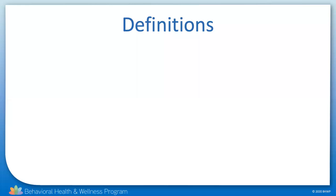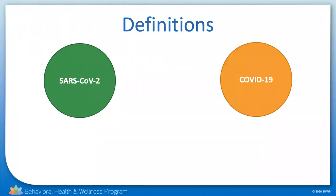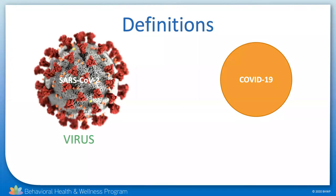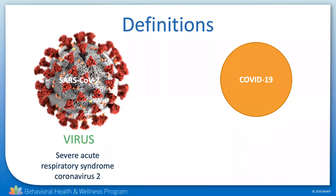The first thing I want to do is distinguish between SARS-CoV-2 and COVID-19. SARS-CoV-2 is the virus, short for Severe Acute Respiratory Syndrome Coronavirus 2. The two is used to distinguish it from its cousin, SARS-CoV-1, which was responsible for the disease SARS, which had a brief but terrifying moment in the sun back in 2002 and 2003.